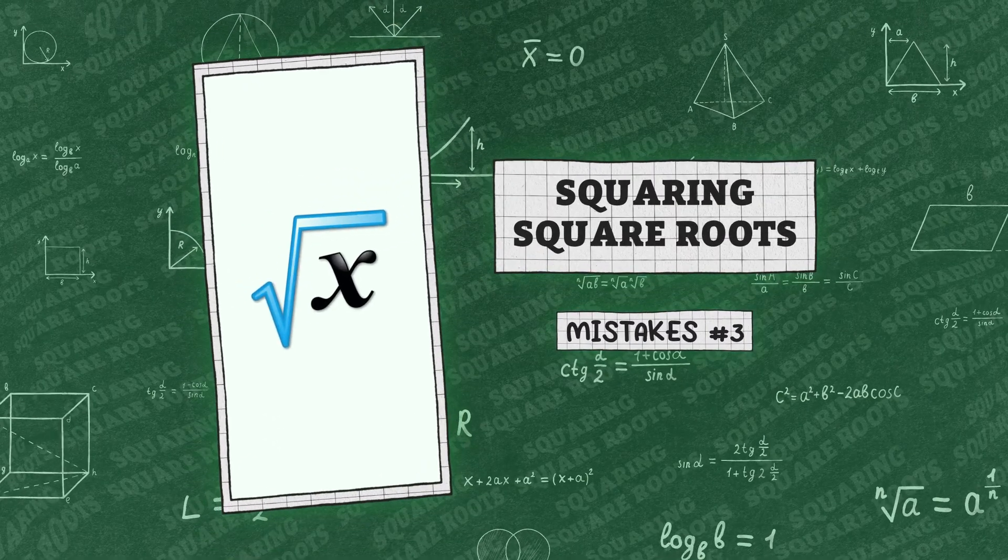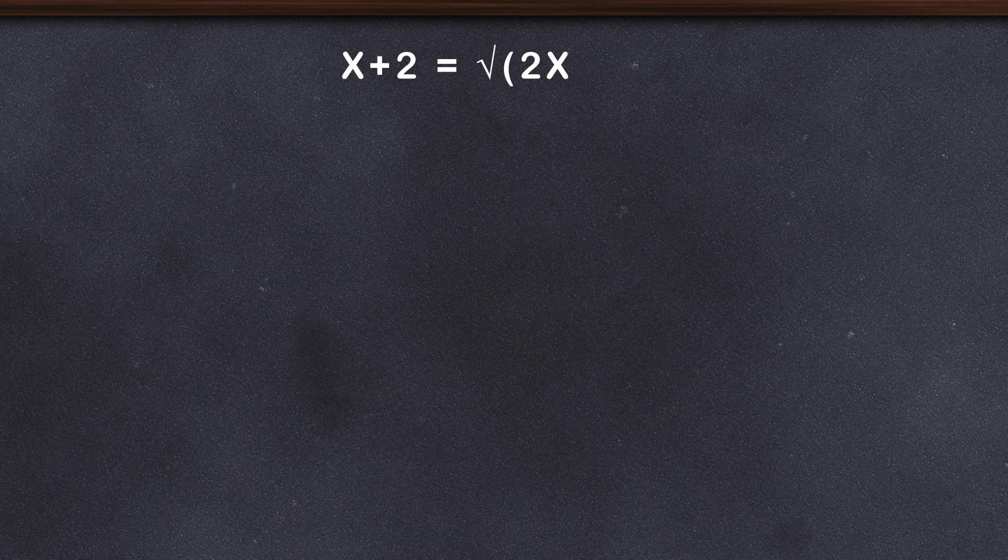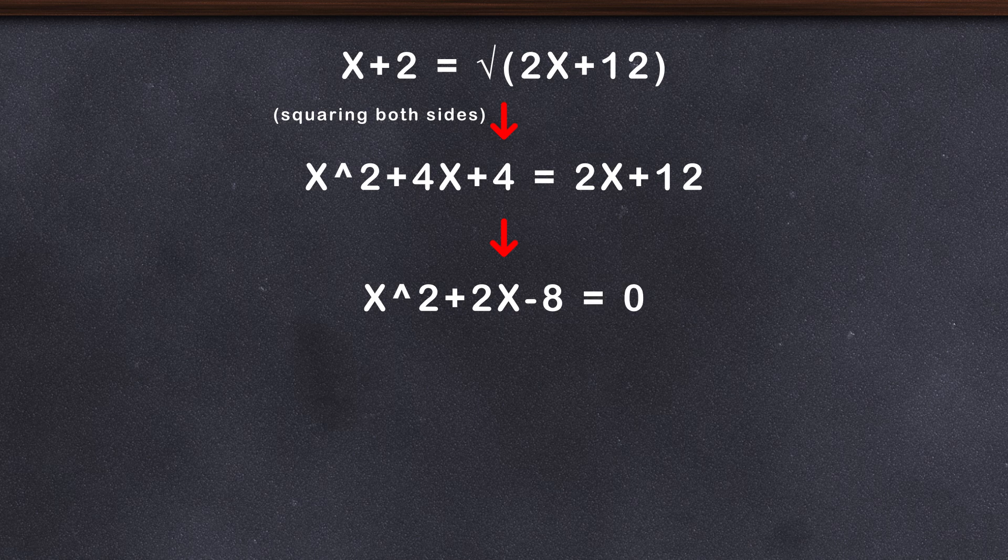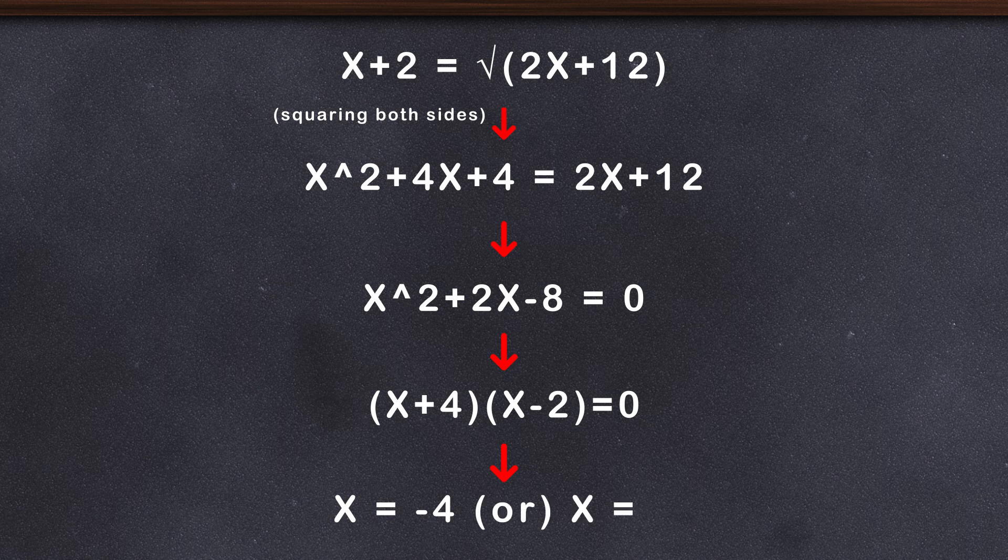Mistake number 3: Squaring square roots. Consider an equation: x + 2 = √(2x + 12). Now let's square both sides. x² + 4x + 4 = 2x + 12. x² + 2x - 8 = 0. (x + 4)(x - 2) = 0. So x = -4 or x = 2.